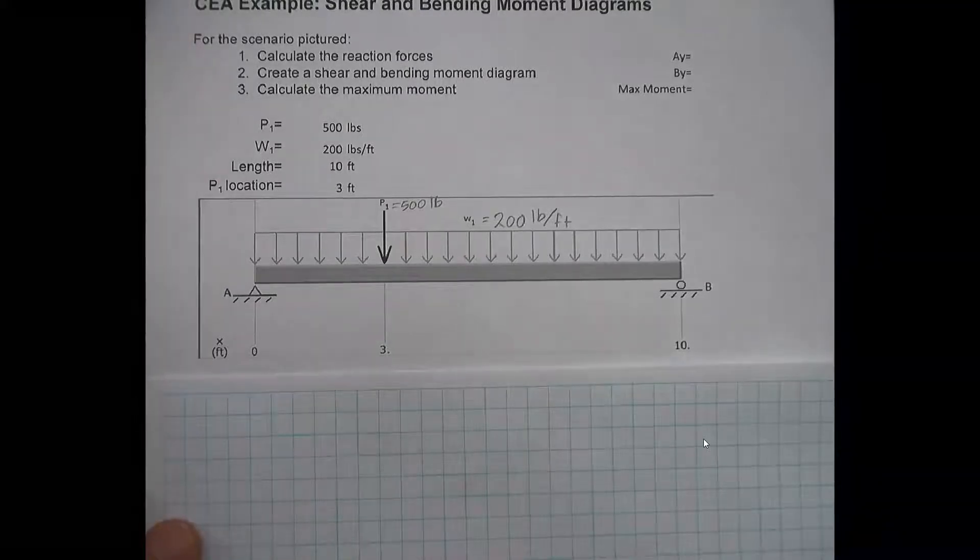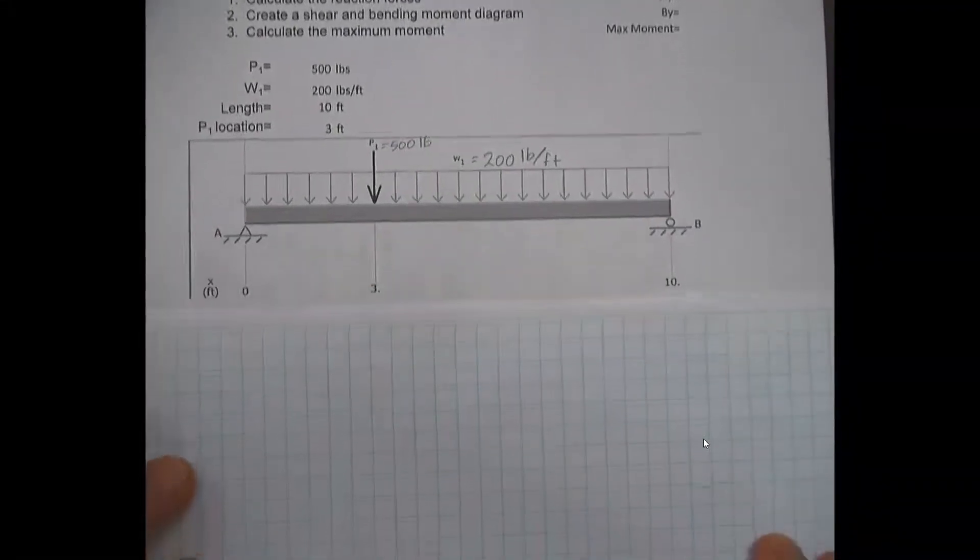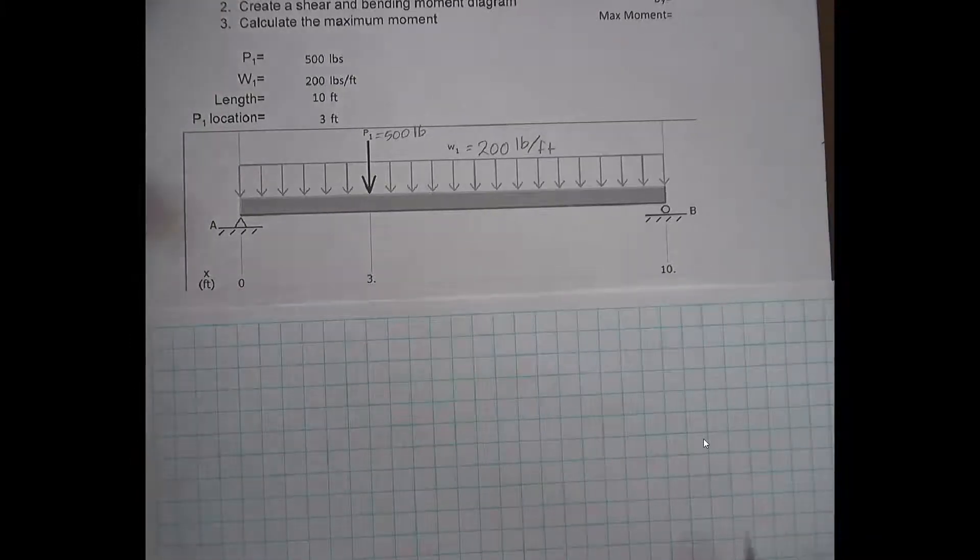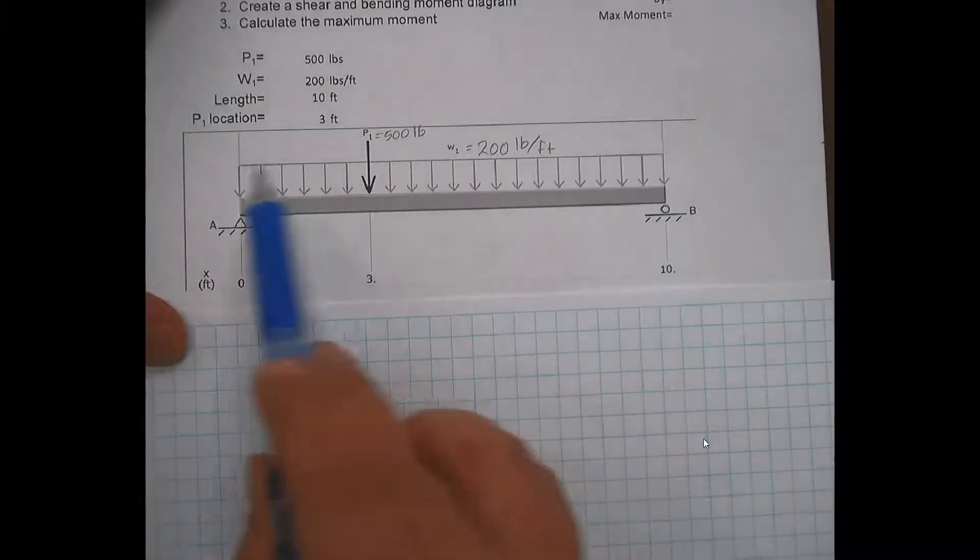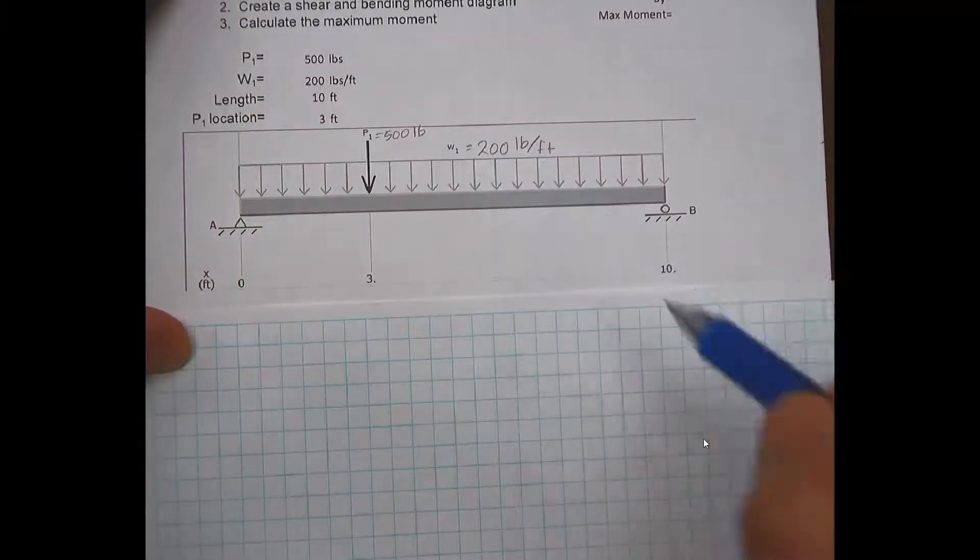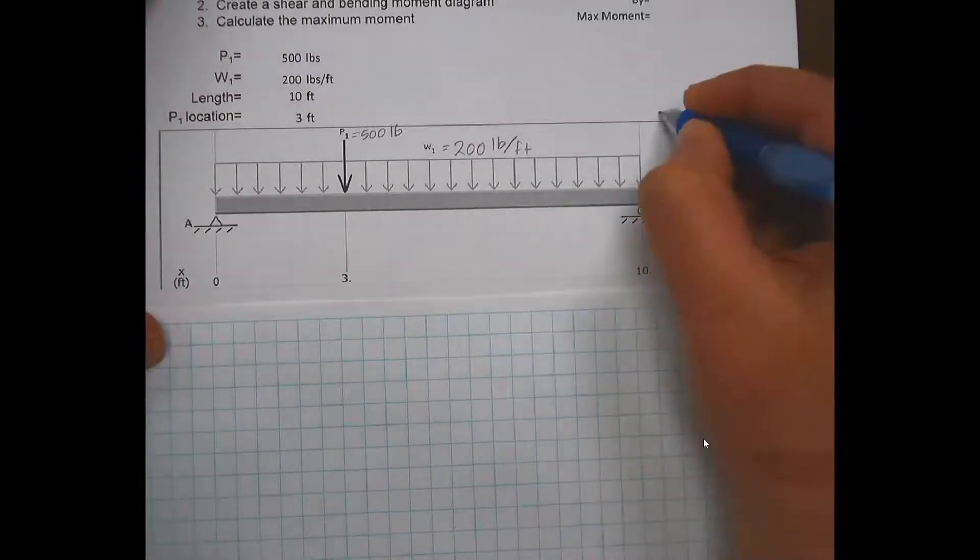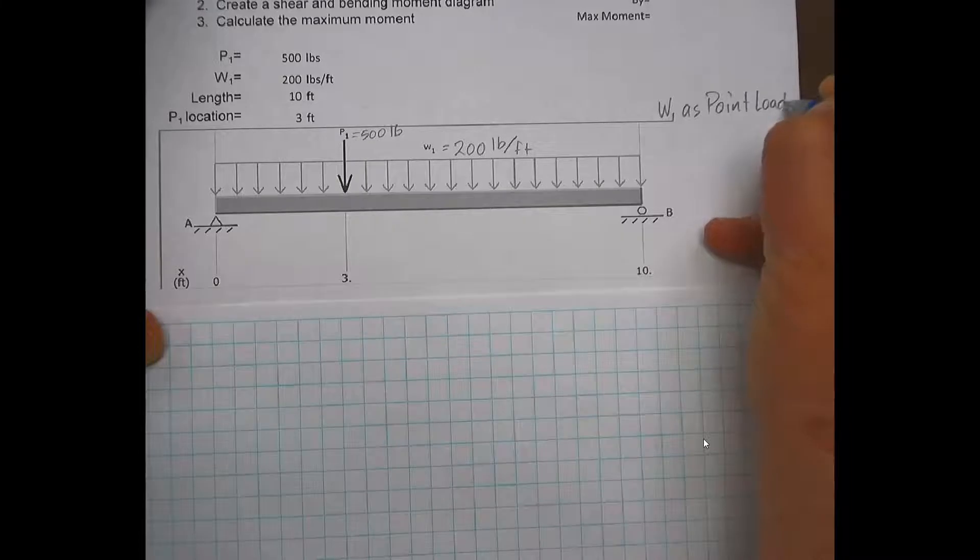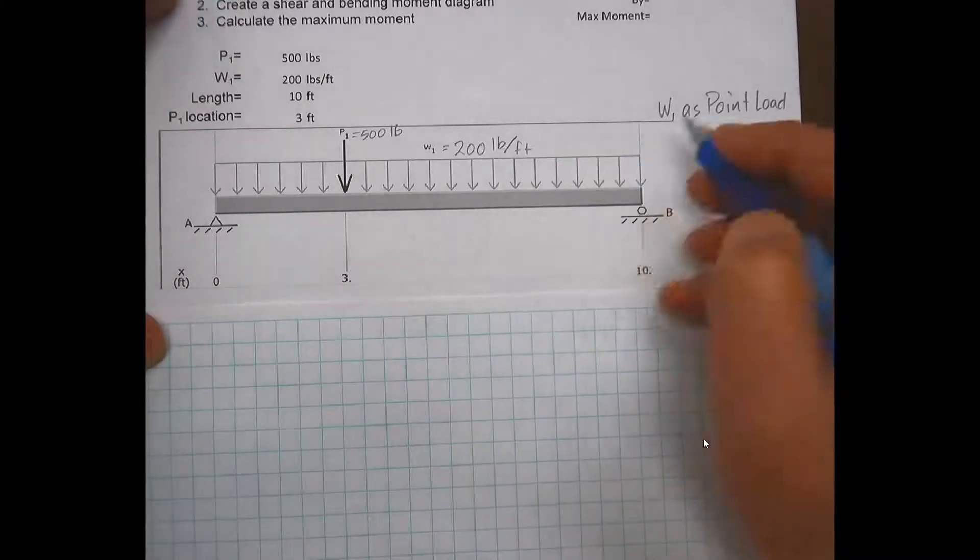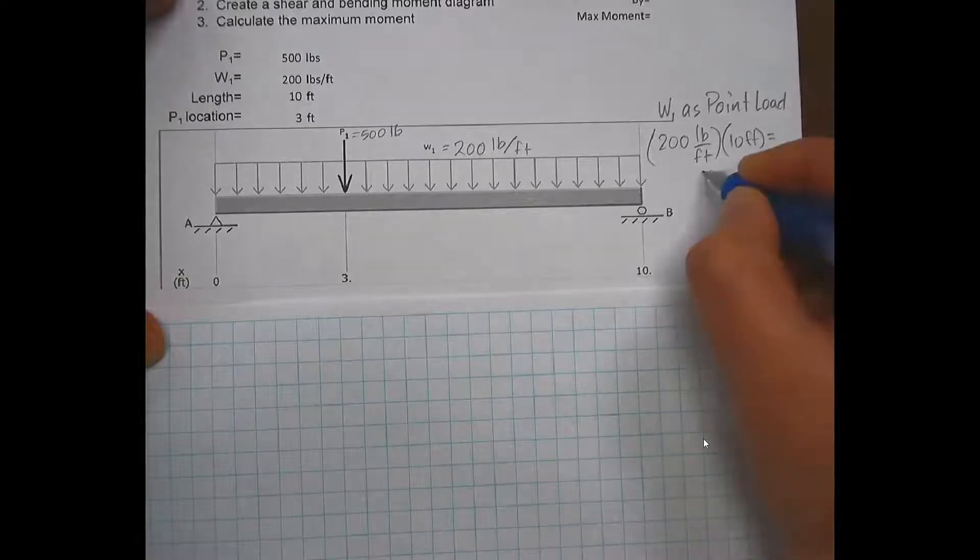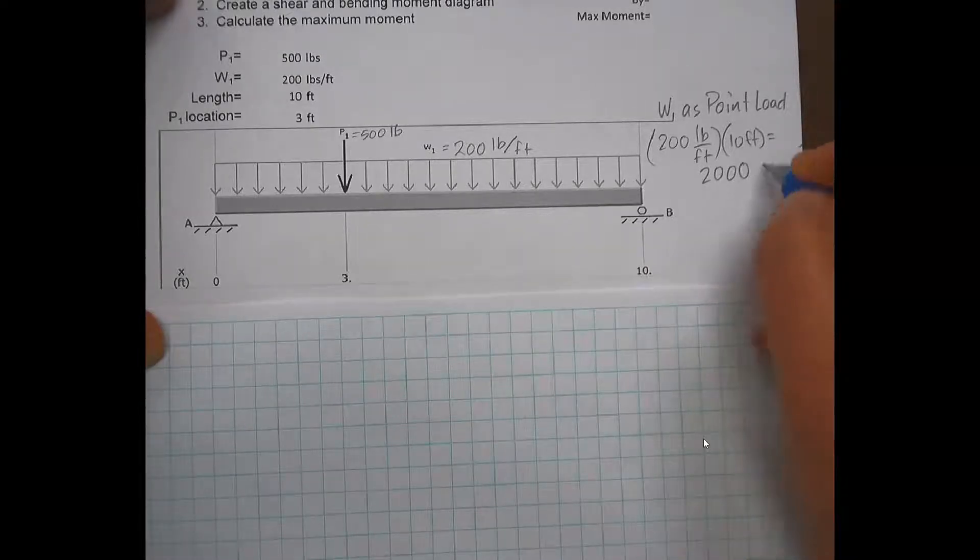First thing we're going to do is create a free body diagram. In order to create that free body diagram, I'm going to start off by taking the distributed load and compiling it into a point load that will be applied at the center. So w1 as a point load is going to be 200 pounds per foot times 10 feet, which is 2,000 pounds.